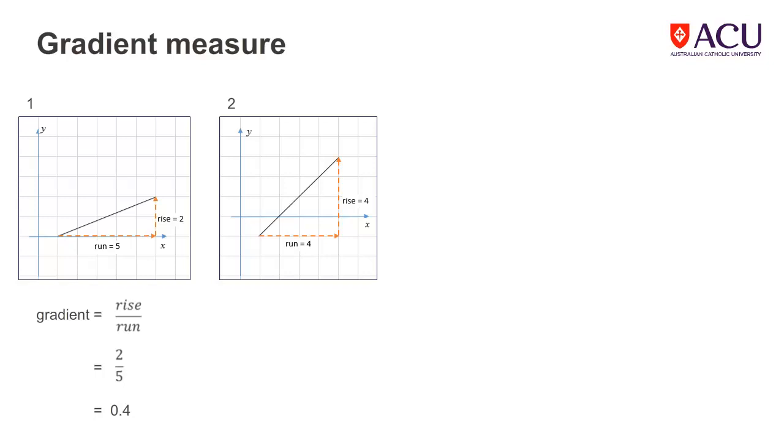In the second graph, which is much steeper, to go from the start to the end, it is 4 units along and 4 units up. Evaluating rise over run for this line gives a value of 1. The greater the value, the steeper the line.